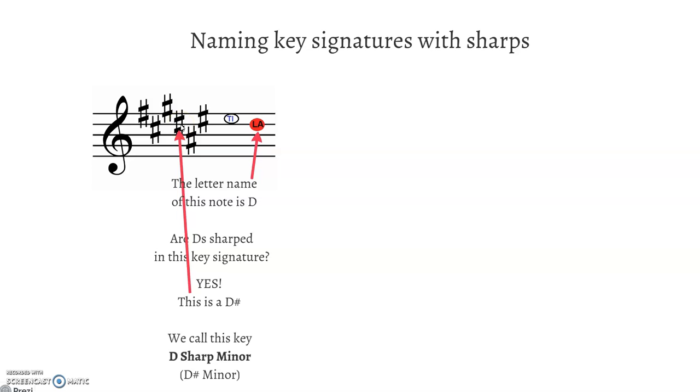So because D's are sharped in this key signature, we're going to call it D sharp minor. If D's were not sharped, we would not say D sharp minor. We would say D minor, but they are sharp. So we're going to call this D sharp minor.